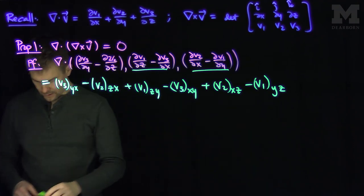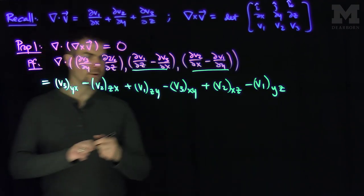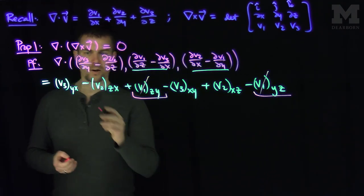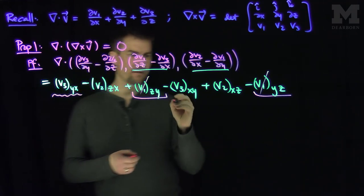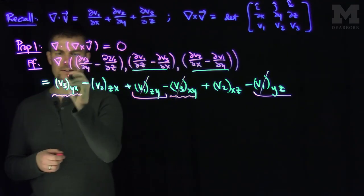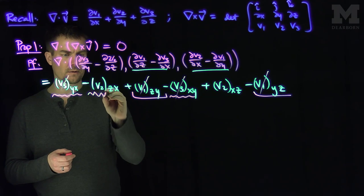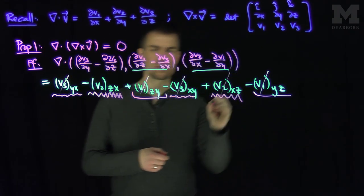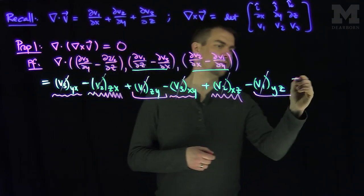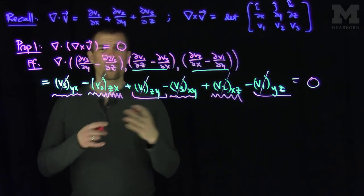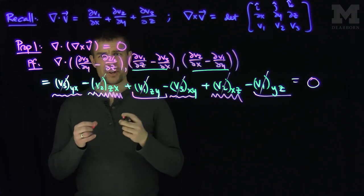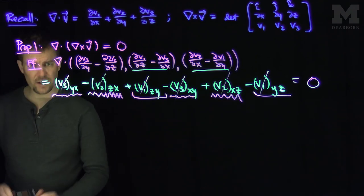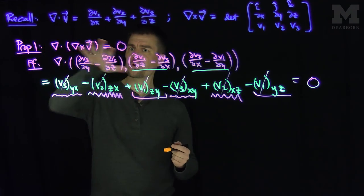Now let's carefully look at the cancellations. The v1 term with z and y derivatives cancels with the v1 term with y and z derivatives. The v3 term with y and x cancels with the v3 term with x and y — opposite signs. And the v2 term with x and z pairs up with the v2 term with x and z — equal and opposite signs. So this is equal to zero. The divergence of a curl is equal to zero.